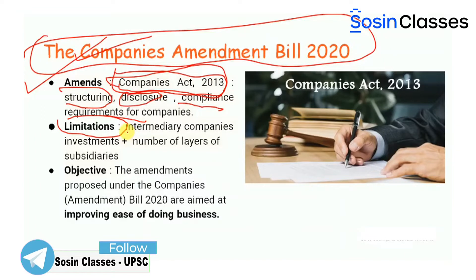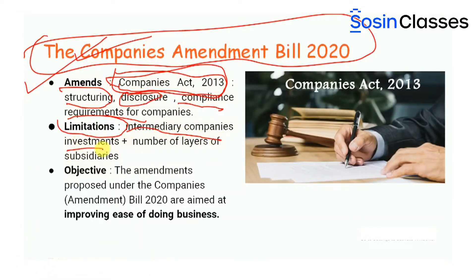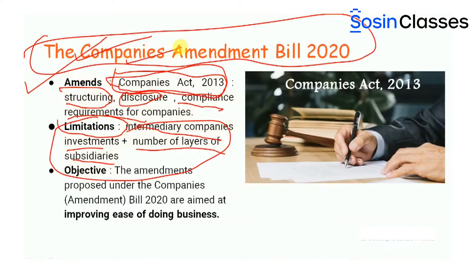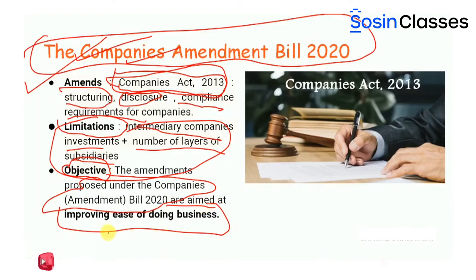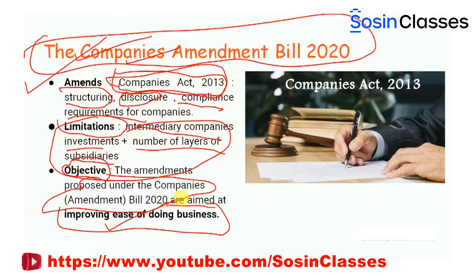The limitations include: first, intermediary company investment — the Act limited the number of intermediary companies through which investments can be made in a company. Second, it also limits the number of layers of subsidiaries, that is the holding or parent company, which a company can have. These limitations will be removed under this bill. Most importantly, the amendments proposed under the Companies Amendment Bill 2020 are aimed at improving the ease of doing honest and ethical business.